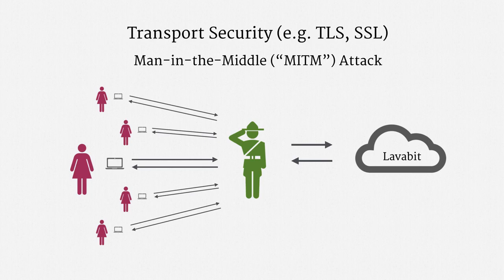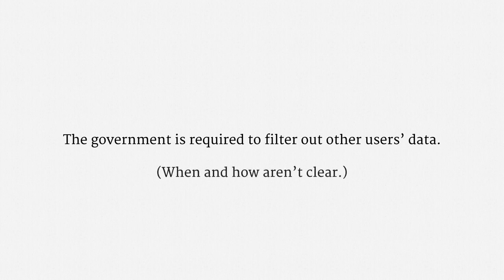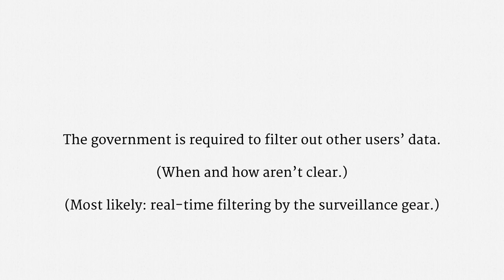The reason technical experts were so concerned about this approach is that it exposed every user's data to the FBI, not just Edward Snowden's. That data included usernames, passwords, and email. The FBI had to actually snoop on every user — before a user connected, the agency didn't know whether it was Snowden, so it had to monitor at least the login portion of each user's traffic. Before turning to what the Fourth Circuit held, I want to make two observations about the law that applies to government Man-in-the-Middle attacks. First, the government is required to filter out other users' data. A wiretap order or a pen register order applies to certain individuals or accounts. The most likely approach is real-time filtering by the government's surveillance gear, and it's technically quite feasible.